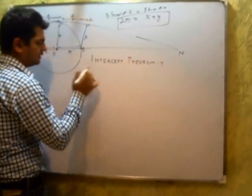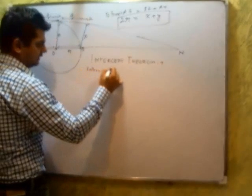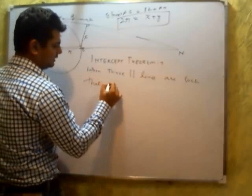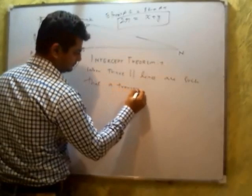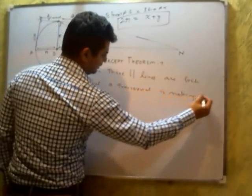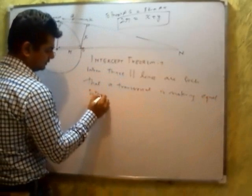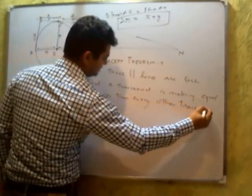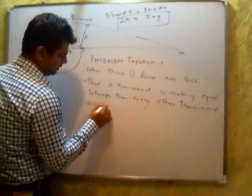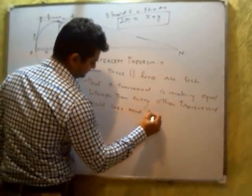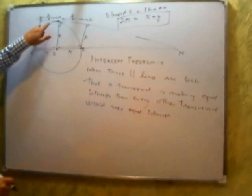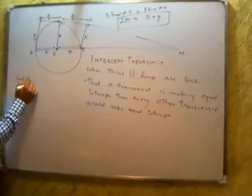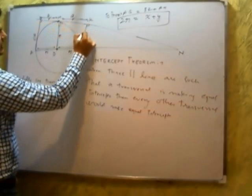The intercept theorem says: when three parallel lines are such that a transversal is making equal intercepts, then every other transversal would make equal intercepts. Therefore this is equal to this, because these are the intercepts. Now if you carefully see, this is 90 degrees, this is 90 degrees — hence these lines are parallel.